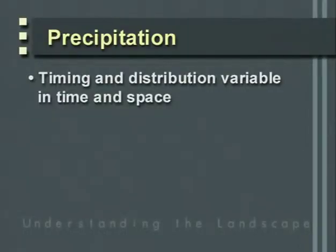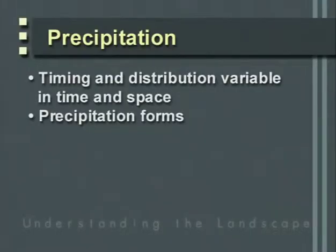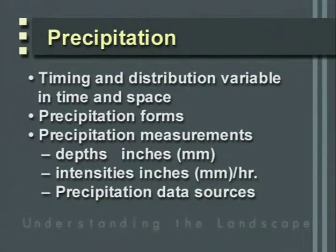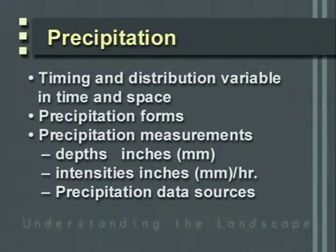Precipitation is really variable in time and space, and that distribution and timing will very much influence the type of watershed and streamflow we'll see. Precipitation can be measured as a depth — inches or millimeters per storm, per month, or per year — or as an intensity, so many inches or millimeters per hour. Those rates of precipitation can help determine what kind of watershed and streamflow we'll get.